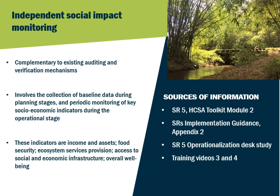In relation to social impact monitoring, SR5 sets out in detail which aspects of community welfare need to be monitored to ensure that the food security and livelihoods of communities are being respected in practice. This enhanced social impact monitoring is intended to complement existing auditing and verification mechanisms. It involves the collection of baseline data during the planning stages and the periodic monitoring of key socio-economic indicators during the operational stage. These indicators are income and assets, food security, ecosystem services provision, access to social and economic infrastructure, and overall wellbeing. Further information is given in the text of SR5 in Module 2 of the HCSA Toolkit, in Appendix 2 of the SR's Implementation Guidance, and in the third training video on SR5 operationalisation.